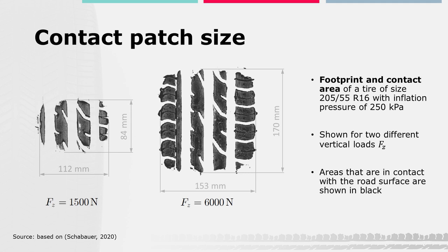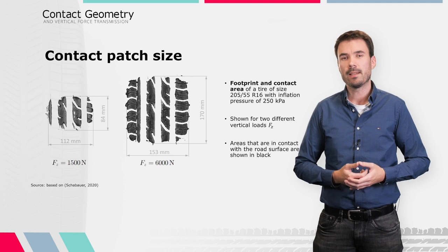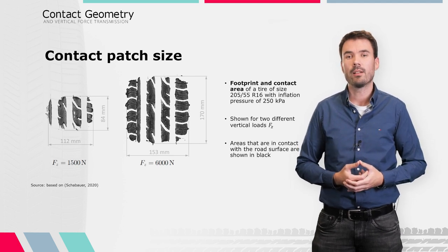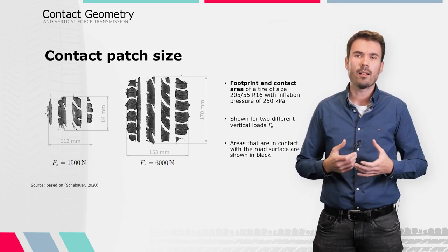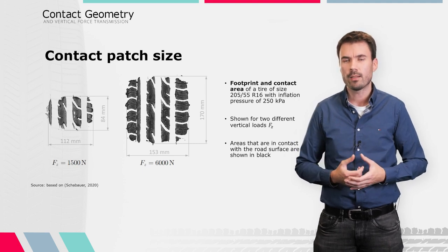The main task of the negative areas is to drain water from the contact area on wet roads. As rule of thumb, about 70% of the overall area is positive, which means that only 70% of this already rather small area is really in contact with the road. For a certain tire, the exact value of the positive area significantly depends on its individual tread design.